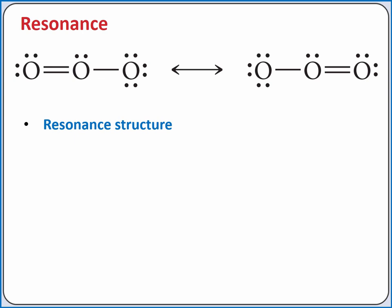However, the actual ozone molecule does not have one single bond and one double bond. Rather, it has two identical bonds that are somewhere between a single and a double bond. The actual ozone molecule exists as a weighted average of the resonance structures.